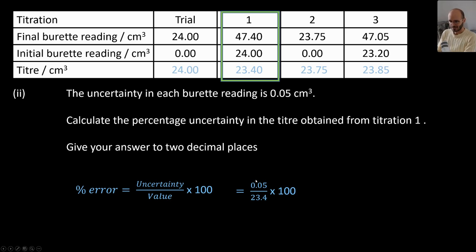0.05, that's uncertainty, over the value 23.4. But this would not be correct, because to calculate the titre you have to measure two values: the initial reading and the final reading. Therefore the overall uncertainty is going to be doubled, which means you need to add times two.